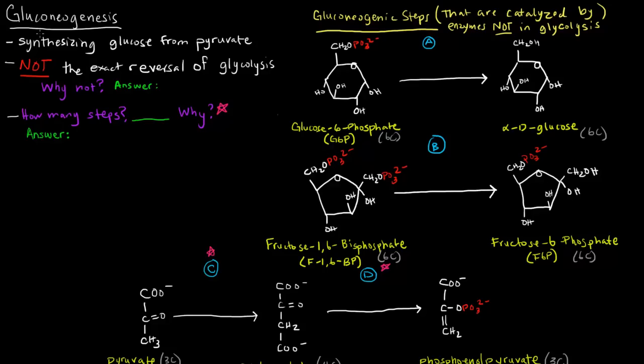In this video, I want to talk about gluconeogenesis. Gluconeogenesis is sort of like the reverse pathway of glycolysis. Gluconeogenesis comes from gluco meaning glucose, neo meaning new, and genesis meaning to make or create.